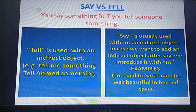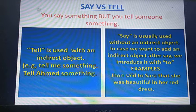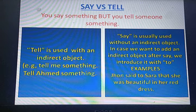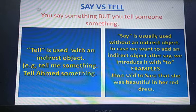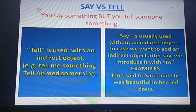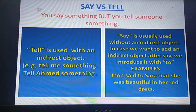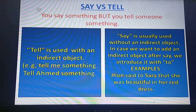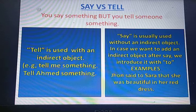And say — say is usually used without an indirect object. However, if we want to add an indirect object after say, we introduce it with 'to.' For example: John said to Sarah that she was beautiful in her red dress. We cannot say 'John said Sarah' — we must say 'said to Sarah.' So we use 'to' after said: he said to me, he said to Mr. Ali. Tell is used with an indirect object; say is not used directly with one.